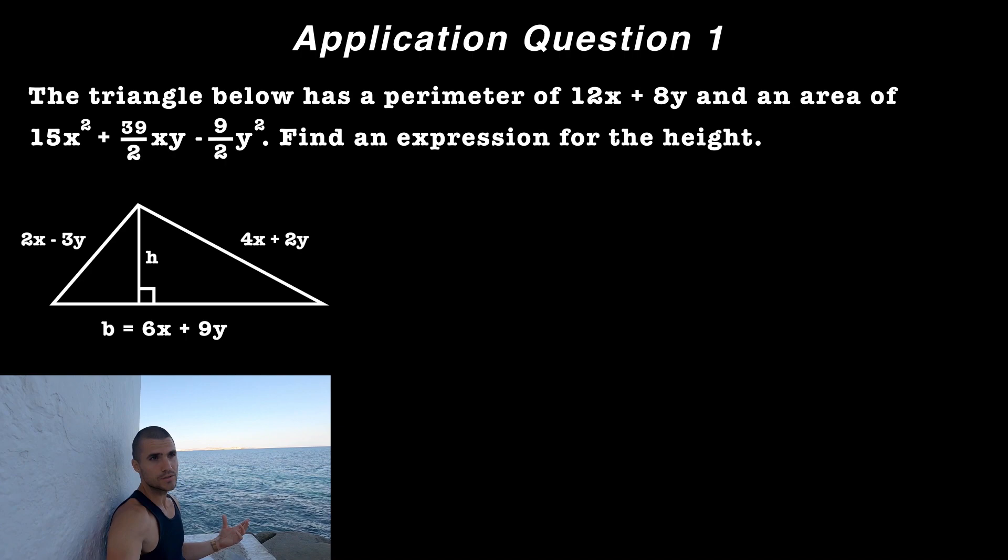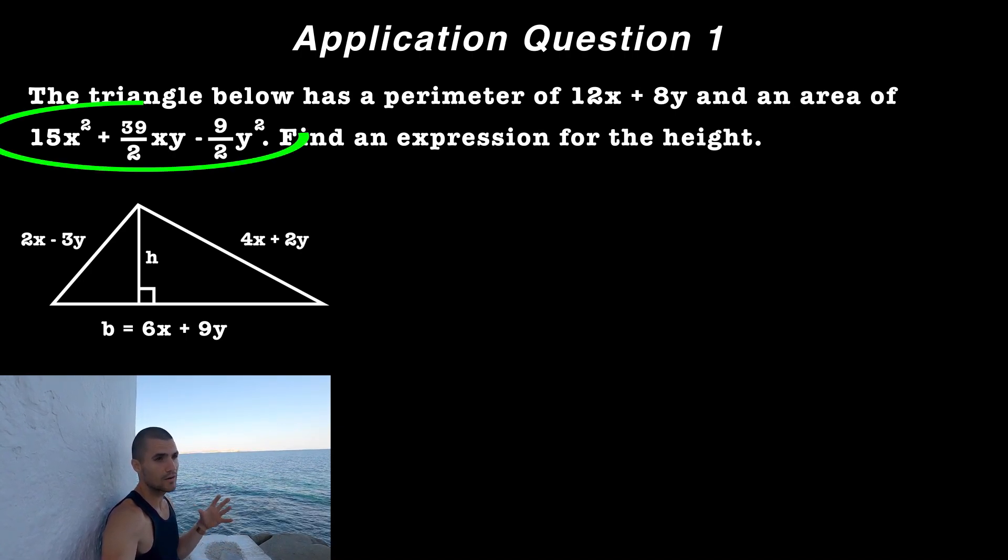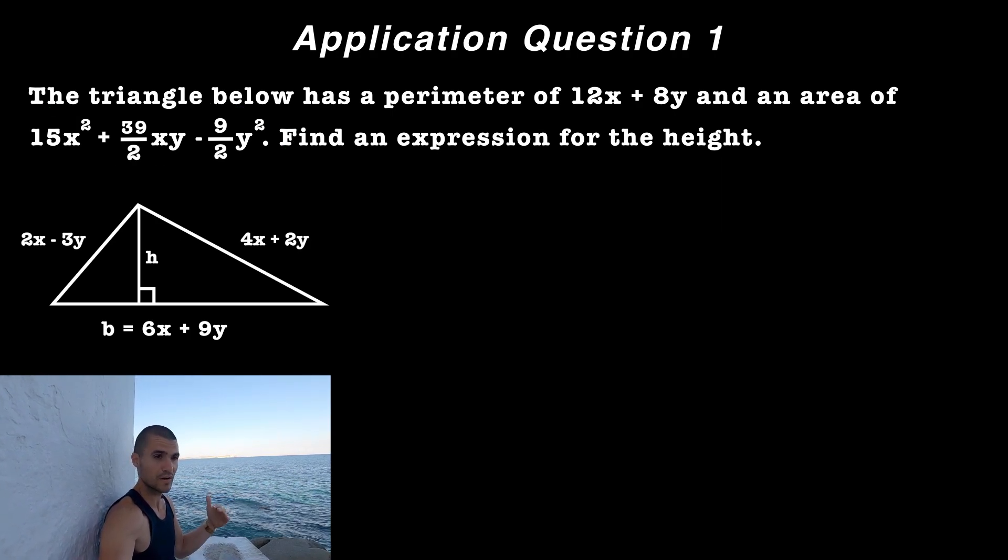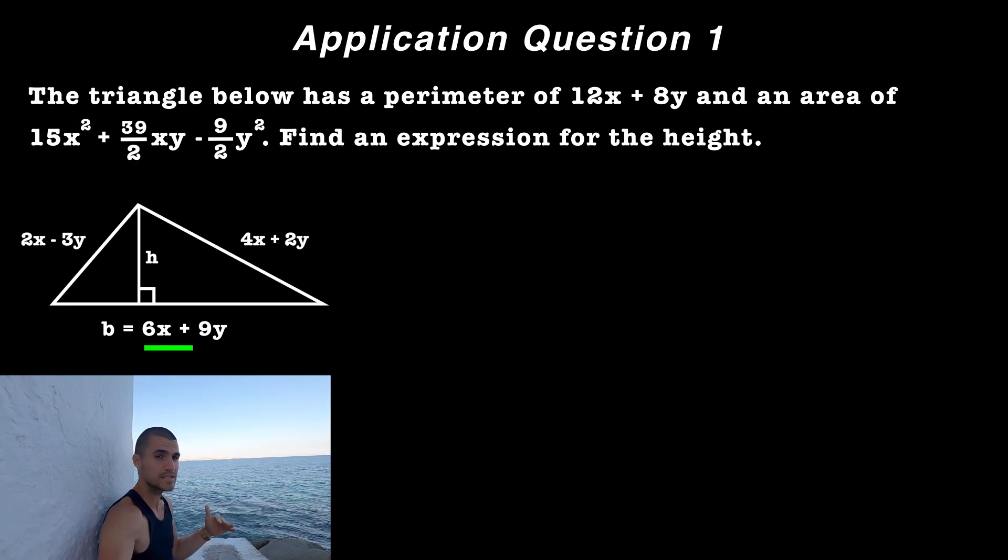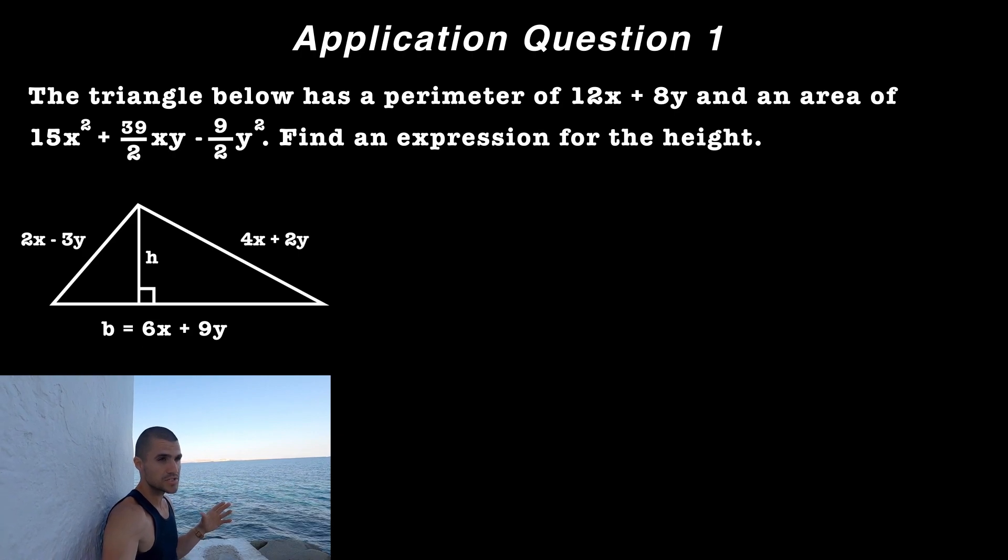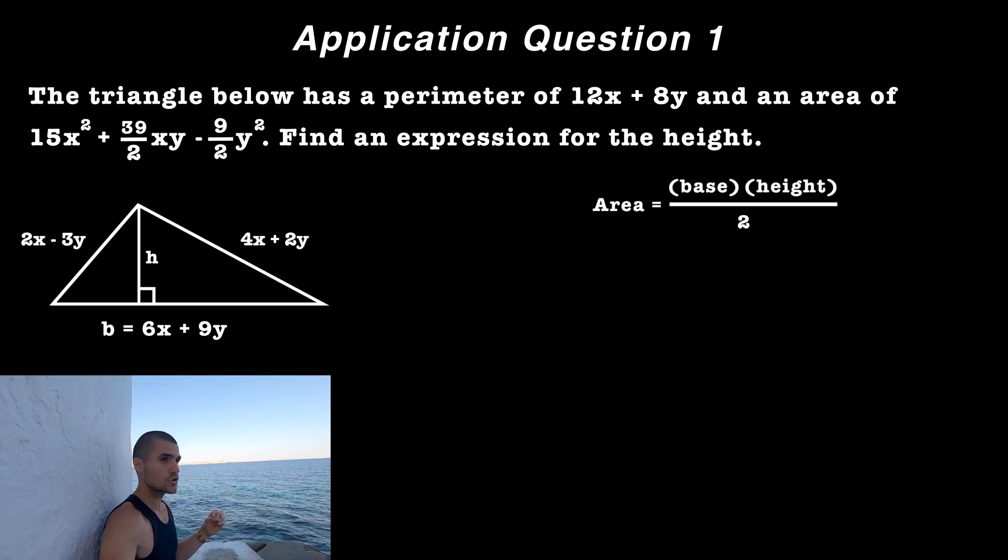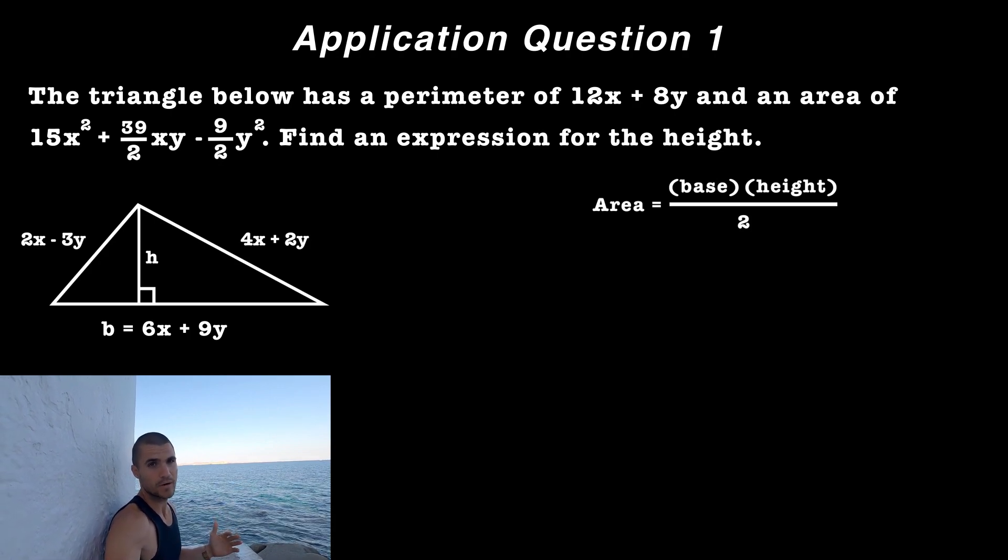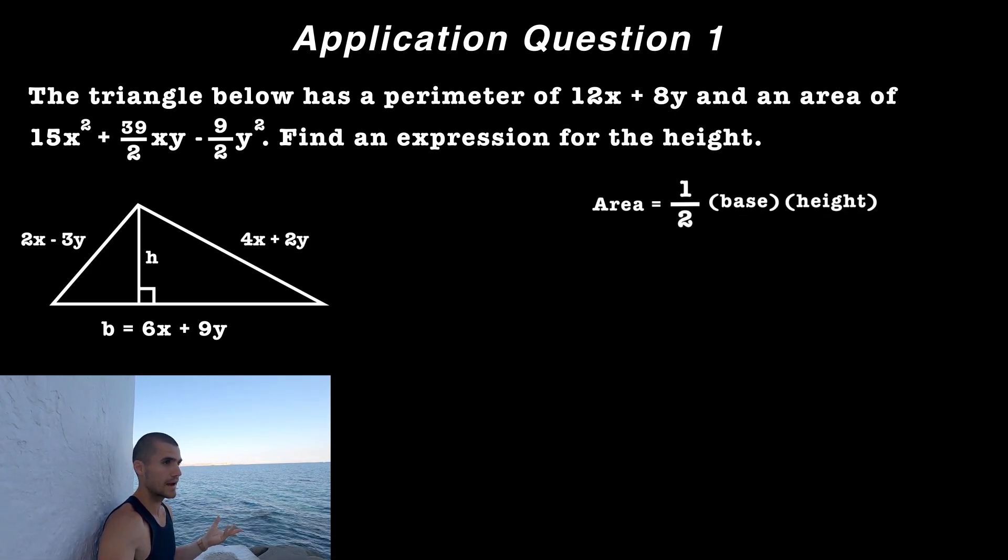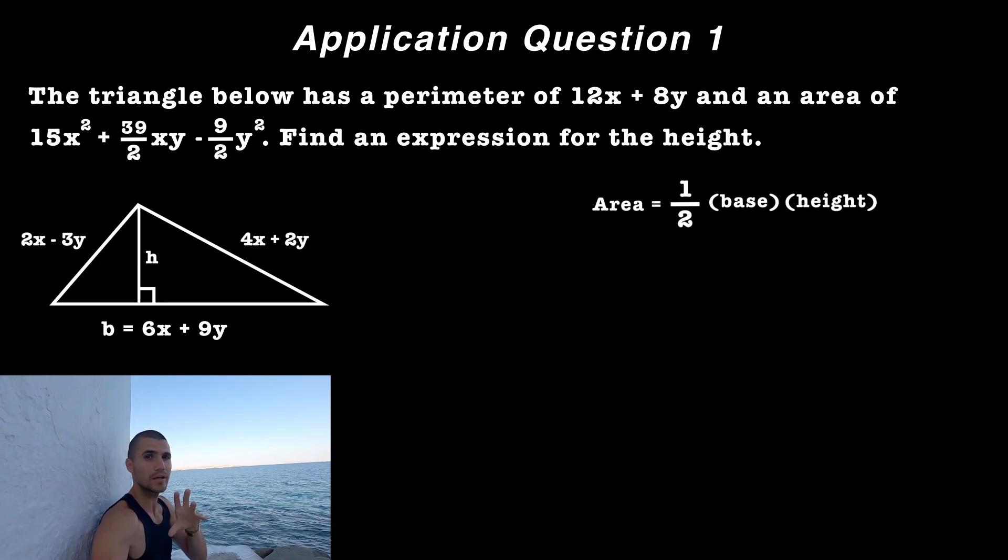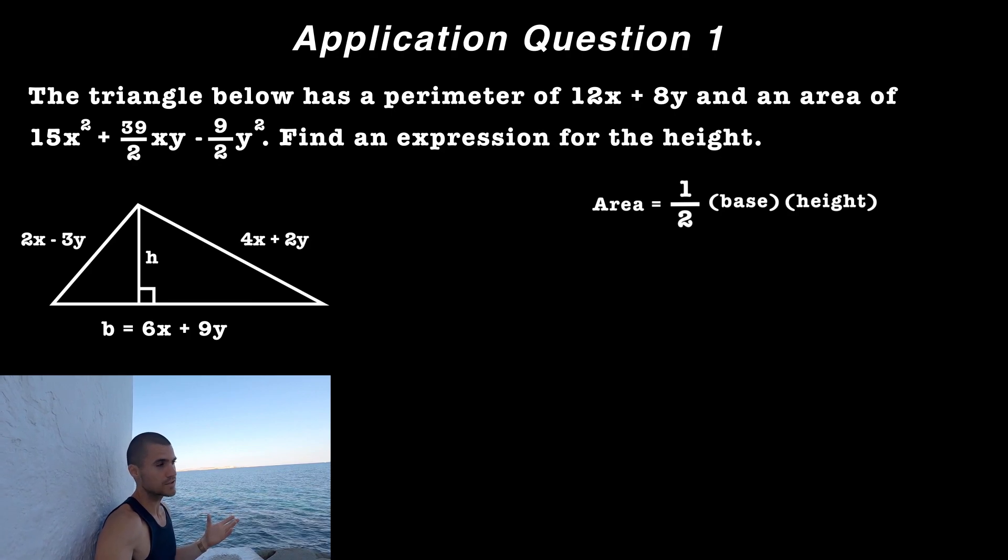So now what we could do is go into using the area expression. The perimeter expression, we're completely done with, we just needed to use that to find the third side, the base. Now with the area expression, it's going to be a little bit more tricky. So we know that the area of a triangle is equal to base times height divided by two. I'm actually going to rewrite that as one half times the base times the height, just so we can separate all of those different factors.